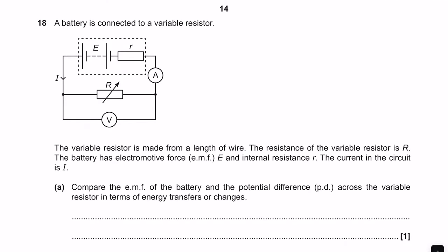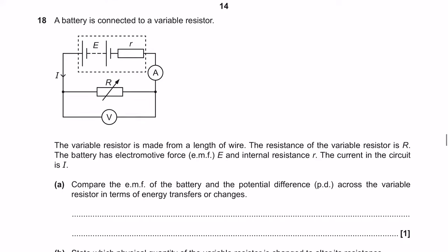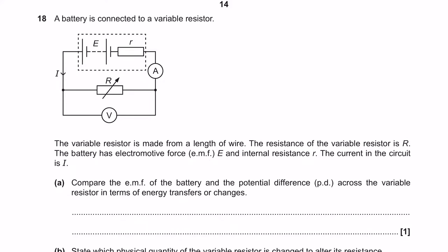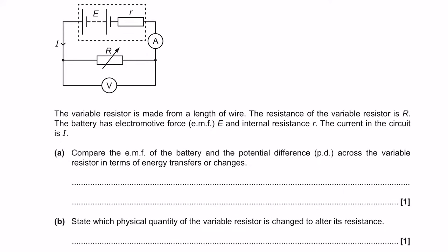Question 18: a battery is connected to a variable resistor made from a length of wire, with EMF E and internal resistance r, and current I. Comparing EMF and potential difference in terms of energy transfer: EMF is chemical energy converted into electrical energy from the source, and potential difference is electrical energy converted into heat energy in the variable resistor.